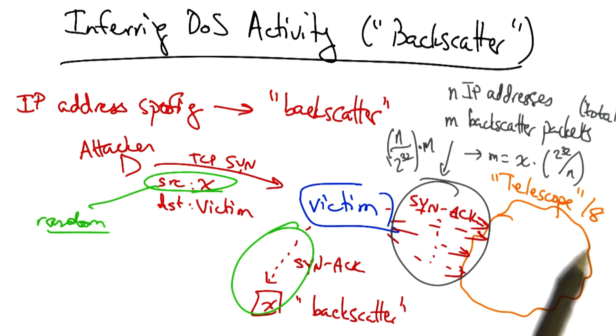in this case if our telescope were a slash 8, or 2 to the 24th IP addresses, we would simply multiply our observed attack rate x by 2 to the 32 divided by 2 to the 24th, or 255.